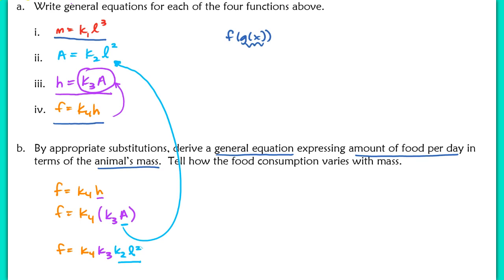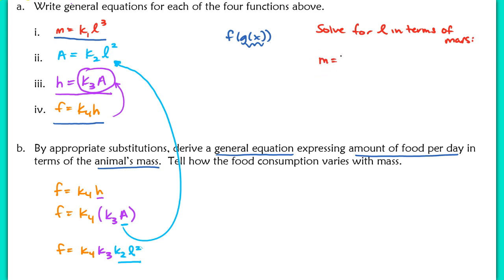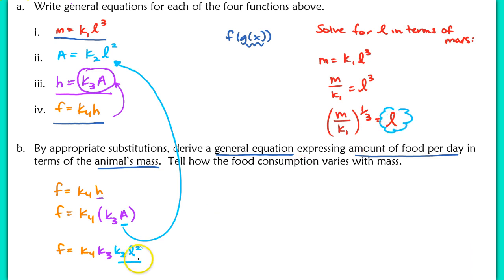We're close to expressing food in terms of mass, but we can't substitute directly because food is in terms of L squared while mass is in terms of L cubed. So off to the side, we solve for L in terms of M. Starting from M equals K₁ times L cubed, we get M over K₁ equals L cubed, then raising both sides to the 1/3 power gives L equals (M / K₁)^(1/3).